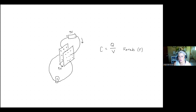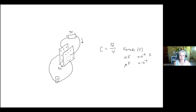Usually we do not see capacitors with farad-level capacitance. It's usually nanofarads, which is times 10 to the negative ninth, or microfarads, which is times 10 to the negative sixth farads. This is the relationship between the capacitance of the capacitor, the charge on it, and the voltage.